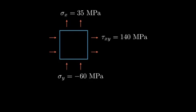Finding the maximum in-plane shearing stress and its orientation. We're given a state of stress where sigma x equals 35 MPa, sigma y equals negative 60 MPa, and tau xy equals 140 MPa.